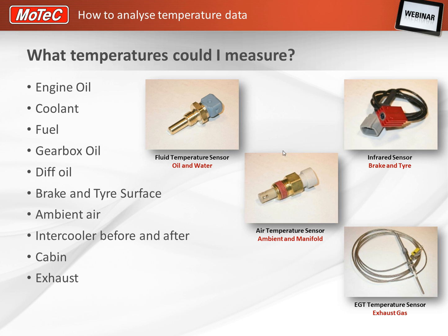In the centre here, we have an air temp sensor. This is commonly mounted in the intake manifold, but you could install them before and after an intercooler if you wanted to see if it's efficient at cooling the inlet temperatures. You could also mount them in a vehicle cabin to measure driver comfort. If a driver is too hot, it may cause some fatigue and their lap times might be slower, particularly late in an endurance race. Looking at the data, you might be able to establish this relationship. You can quickly see how versatile these sensors can be.